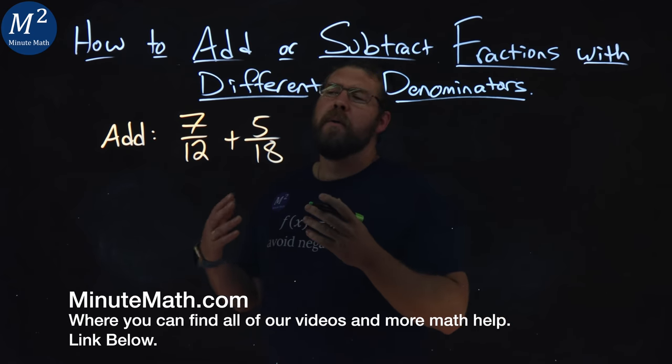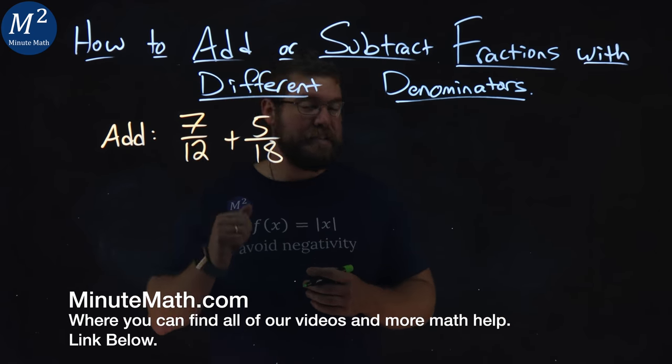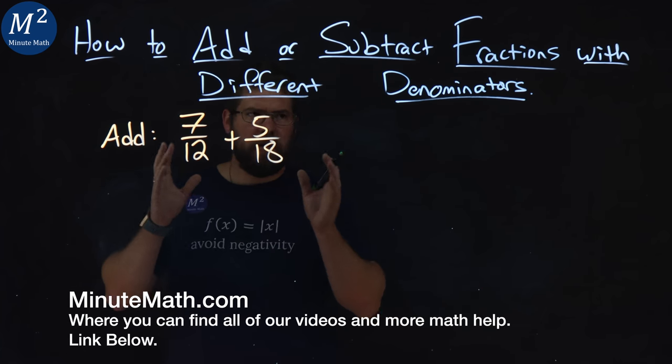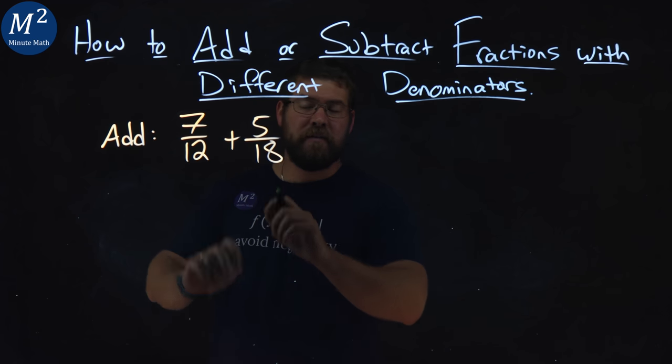We're given this problem right here. Add 7 twelfths plus 5 eighteenths. We first want to find our least common denominator between these two fractions. Notice, they're not the same.